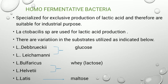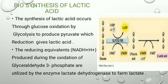Lactobacillus species are used for lactic acid production with various substrate variations. For example, Lactobacillus delbrueckii and Lactobacillus helveticus are used for production from whey or lactose. Lactococcus lactis is used for production from maltose.